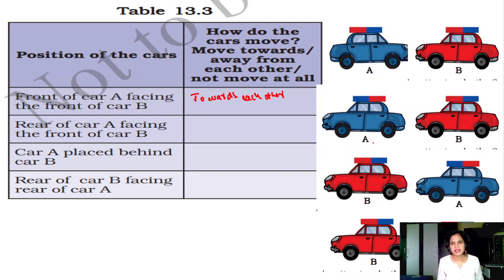Rear of car A, this is the rear end. It is the front end. Rear of car A facing the front of car B. Now these two are same sides of the magnetic poles. Same poles repel each other. Move away from each other.